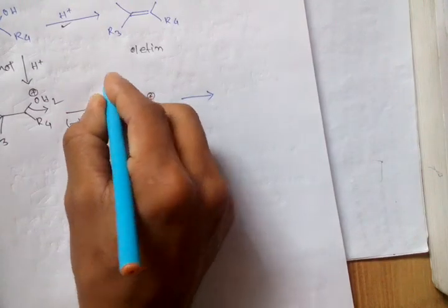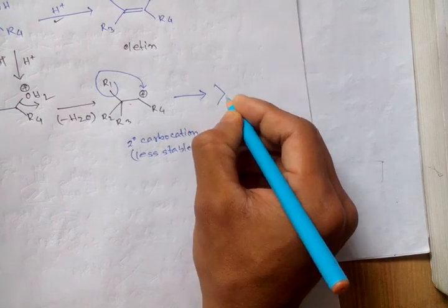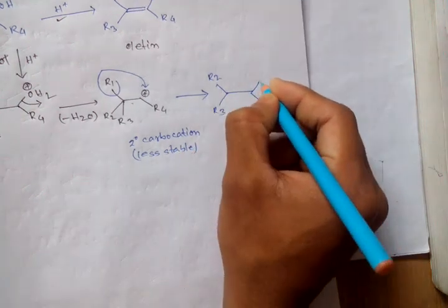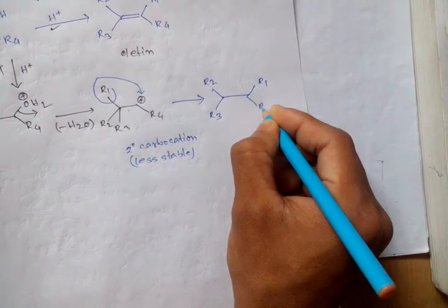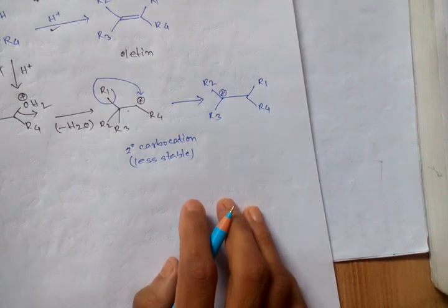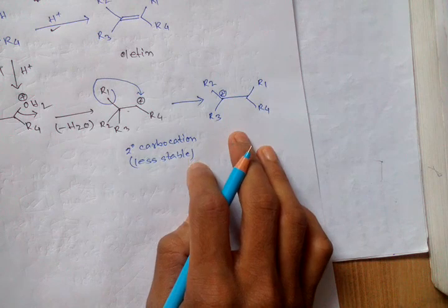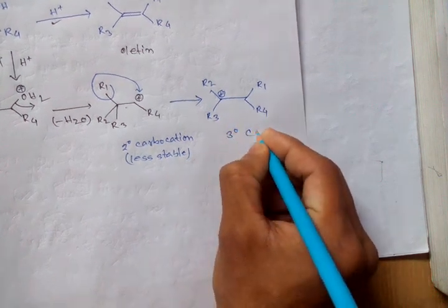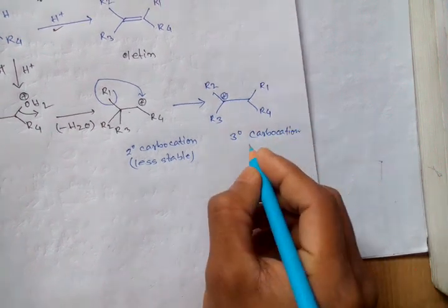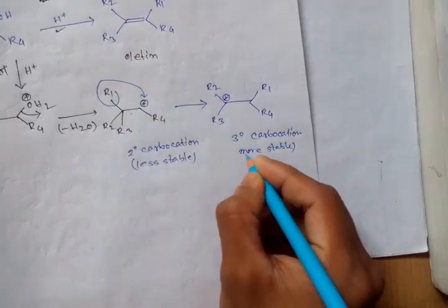So this one rearranged here to form a rearranged product like that. R2, R3, R1, R4. There it is positive charge. After rearrange, it will give 3 degree carbocation. And 3 degree carbocation is more stable than 2 degree carbocation.